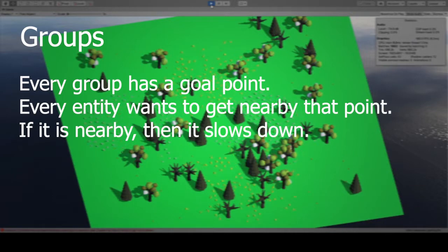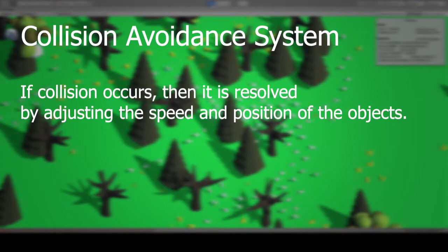Every group has a goal point. Every entity wants to get nearby that point. If it's nearby, then it slows down. If collision occurs, it is resolved by adjusting the speed and position of the objects.